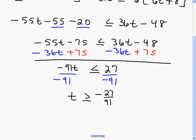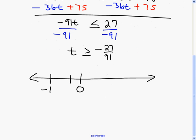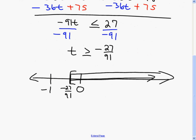Graphing t ≥ −27/91: on the number line, negative 27/91 is a fraction between 0 and negative 1, closer to 0. Place it there, use a bracket since it's greater than or equal to, and shade everything to the right. In interval notation, that's bracket negative 27/91 to infinity.